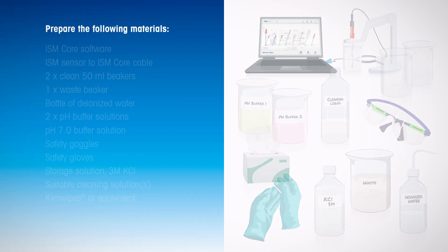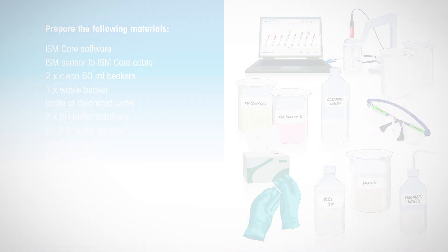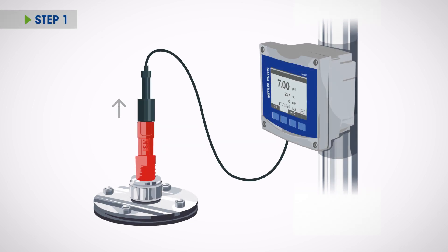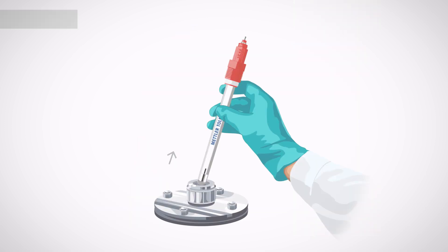Before beginning your calibration, gather all the materials you need. Isolate the pH sensor to be calibrated from the process and disconnect the cable. Remove the sensor.